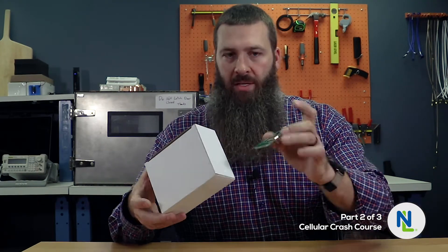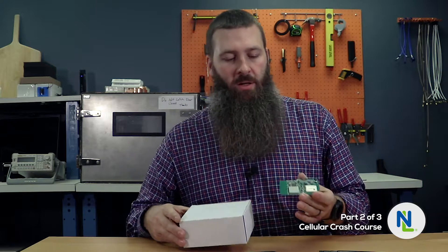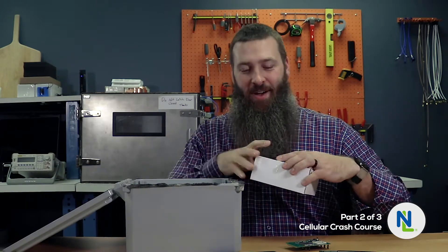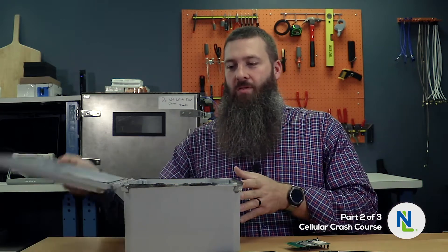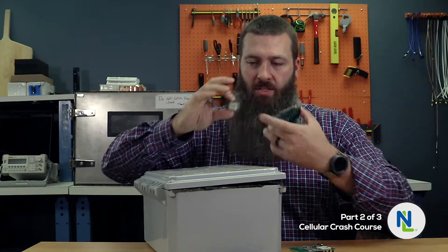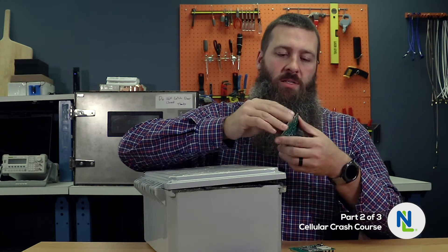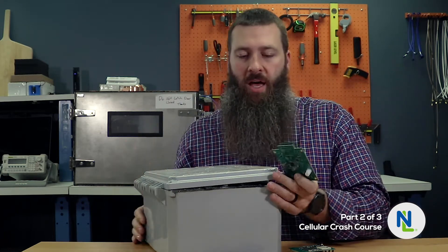Here's an example of a module-based device — you can take this module, put it in your device, and take your device through the final level of certifications. This is our makeshift end device: you take your module, design it into your end device, and now you have a full end device containing a module which contains the chipset. In the case of a NimbleLink Skywire modem, this is the end device — it has the module and chipset in it, so it's fully end device certified. You add it to your device design and your whole device is already certified.